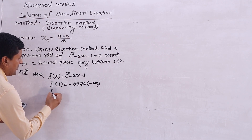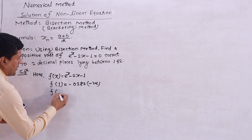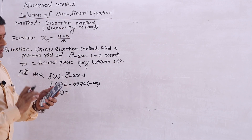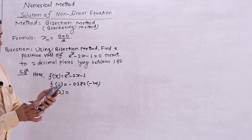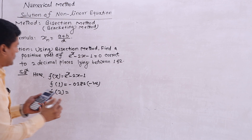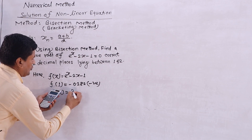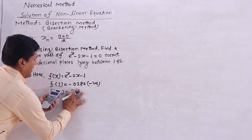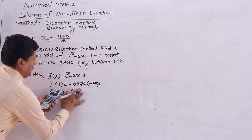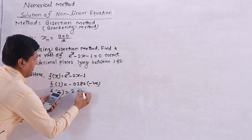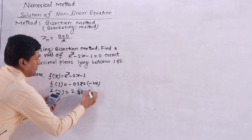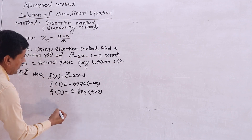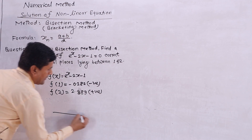Now I will use the x value of 2 and calculate. The result is 2.389, which is positive. So f(2) is positive — the curve is above the x-axis at x = 2.